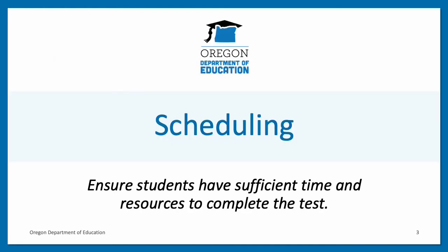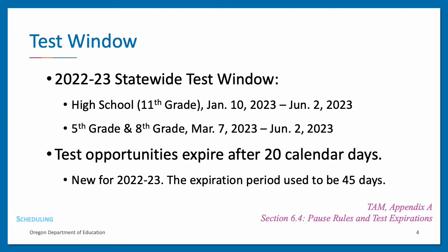Planning for test scheduling ensures that students have sufficient time and resources to complete the test. The OSAS statewide test windows for the 2022-23 school year are listed on this slide. Each test opportunity is subject to a 20-day expiration period, which begins the moment the student first logs into the test. Please note that the expiration period used to be 45 days — this marks a change for the current school year. For more test window information, please see Appendix A of Oregon's Test Administration Manual, or TAM, and for more information on pause rules and test expirations, refer to section 6.4 of the TAM.